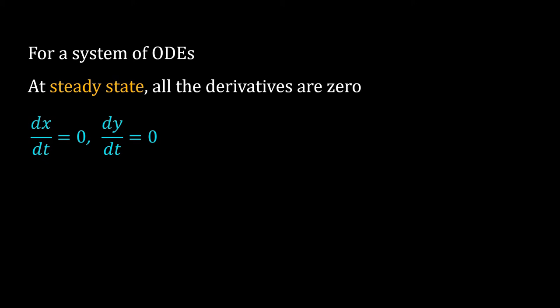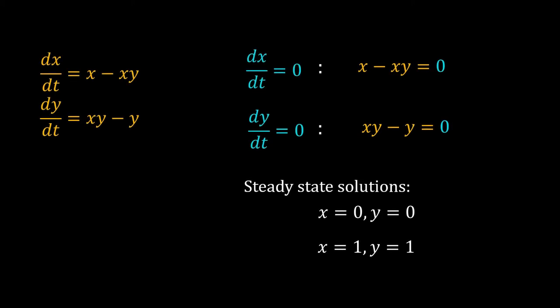So, for the predator prey model, at the steady state, both dy/dt and dx/dt must be 0. Setting both the derivatives 0, we get two equations: x - xy = 0 and xy - y = 0. Solving these two simultaneous equations, we get the steady states. x = 0, y = 0 and x = 1 and y = 1.